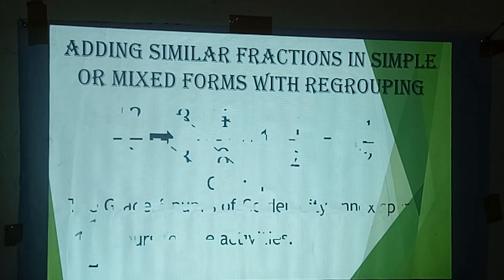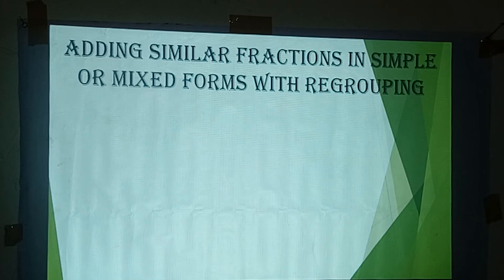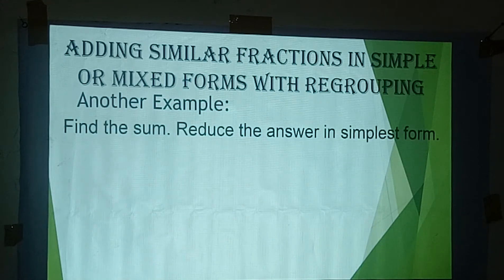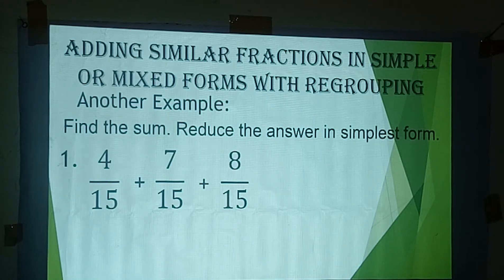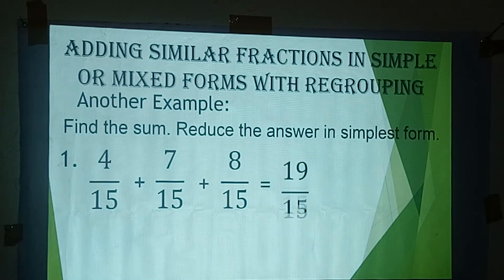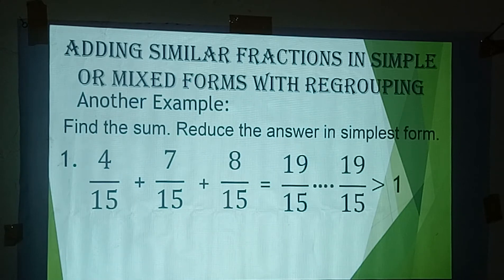Let me give another example on how to add similar fractions in simple or mixed form with regrouping. The instruction is: find the sum and reduce the answer to simplest form. Number 1: 4 over 15 plus 7 over 15 plus 8 over 15. These are simple fractions, meaning they have no whole number. So 4 plus 7 is 11, plus 8 is 19 over 15.